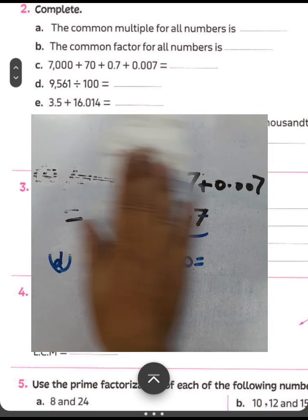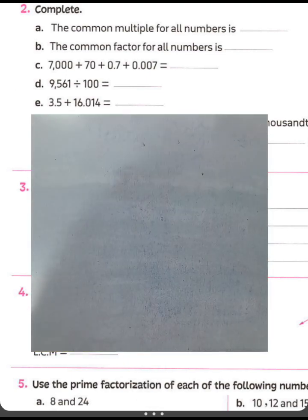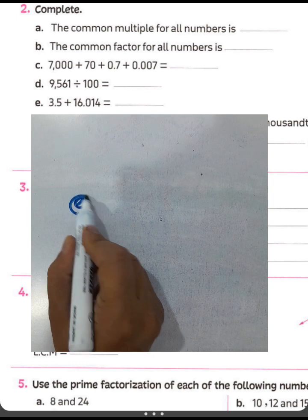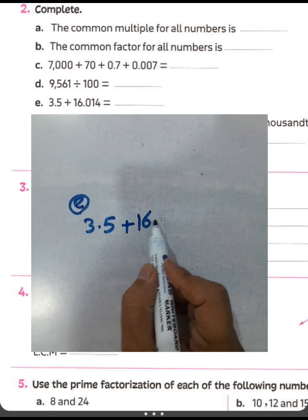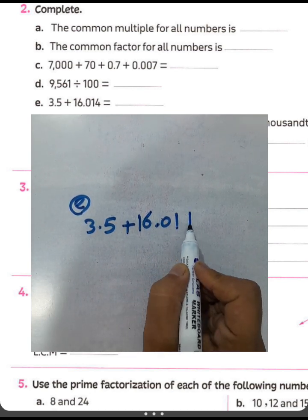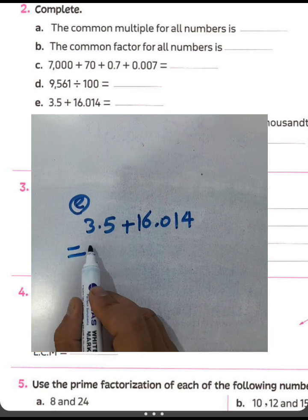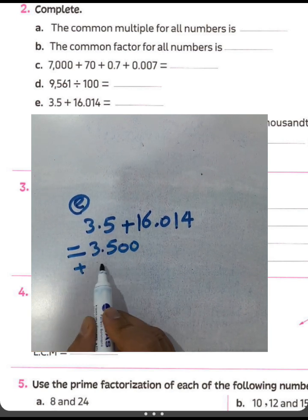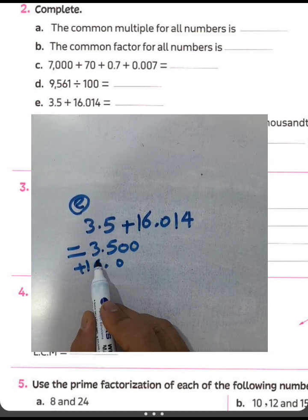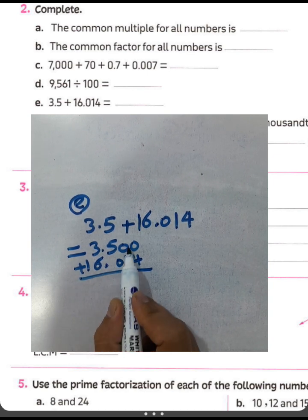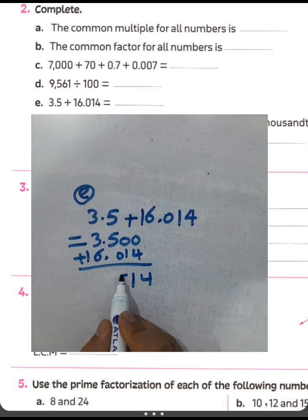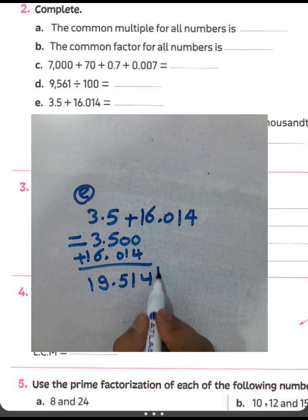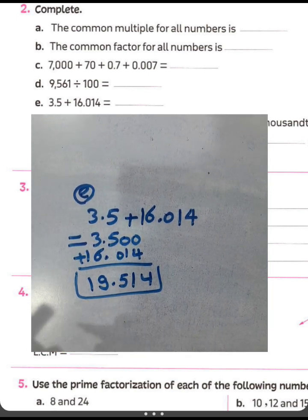Question letter E: three point five, plus sixteen point zero one, plus four. We can put double zeros behind whole numbers, then align the decimal points. Write the numbers in columns: four plus zero equals four, zero plus one equals one, five plus zero equals five, three plus six equals nine. The result is nineteen point five one four, or nineteen and five hundred fourteen-thousandths.